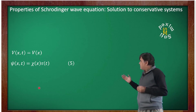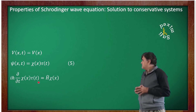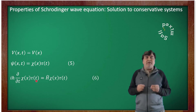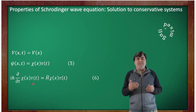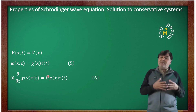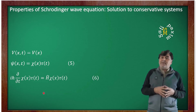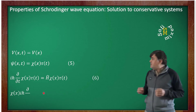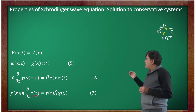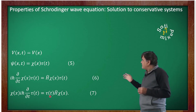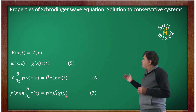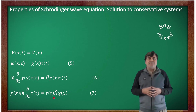Substituting this form of the wave function into the Schrödinger wave equation, since χ(x) is time independent and τ(t) is position independent, I can separate the operators. This allows me to rewrite the equation in the form: χ(x) multiplied with iota h-bar partial over partial t applied to τ(t) equals τ(t) multiplied with H-operator applied to χ(x).